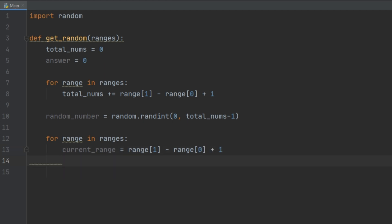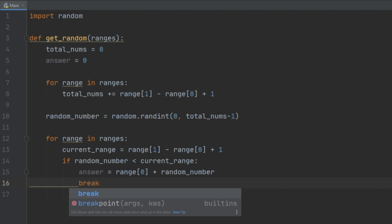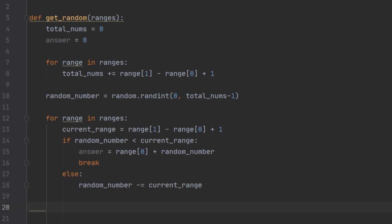Now we need to check if the random number is within the current range that we're on. If it is, we know that the number we're looking for is within this current range. Our answer is going to be that first element in the range plus whatever we have left over in our random number, and then we can break out of the for loop. Otherwise, we're going to subtract however many numbers are in our current range from random_number. Finally, we can just return our answer.